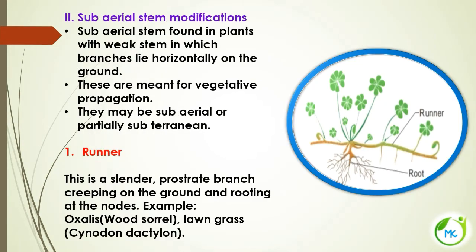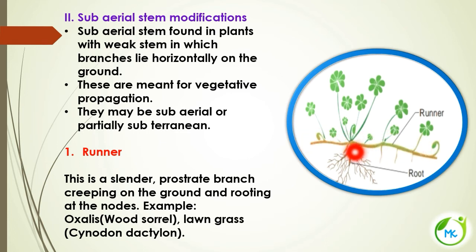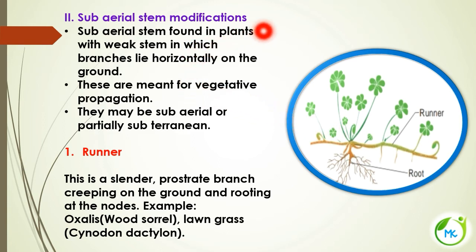The next modification is subaerial stem modification. This kind of modification is found in plants with weak stems, where branches lie horizontally on the ground. These are meant for vegetative propagation and may be either subaerial or partially subterranean — partly above and partly below the ground. In subaerial stem modification, first we are going to see runner.